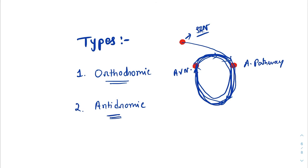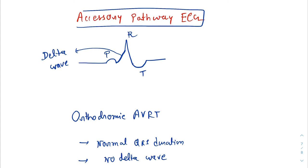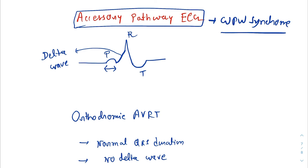Now let's recapitulate the ECG of accessory pathway or WPW syndrome. There will be a P wave with a very short PR interval because the impulse is not traveling through the AV node — which has a refractory period — but rather through the accessory pathway, bypassing the AV node. In the QRS complex, there will be initial upward slurring known as the delta wave, widening of the QRS overall, and there may be T-wave inversion or ST-T changes.